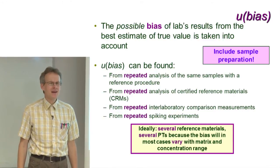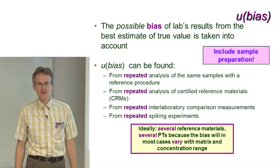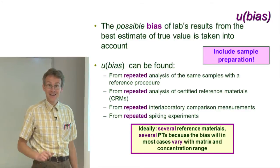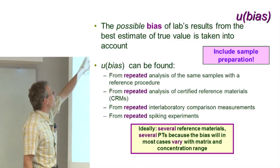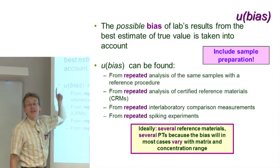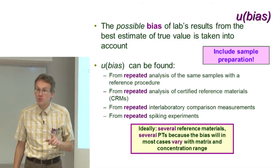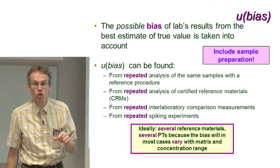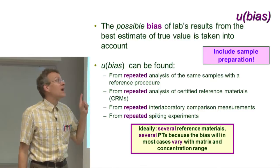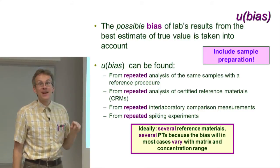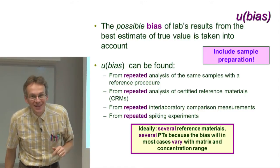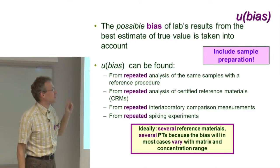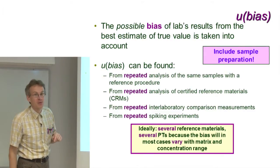Making many parallel measurements can be impossible for practical reasons. Therefore, what often happens is that we don't really know if our procedure has a bias or not, and we quantify our non-knowledge of the existence of bias via the U-bias uncertainty component.